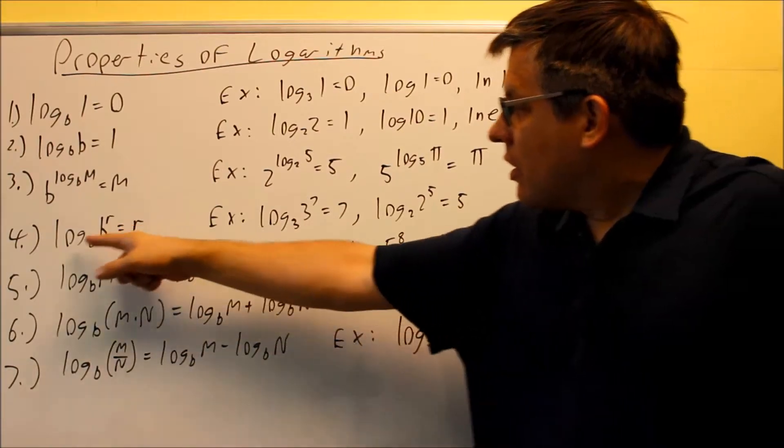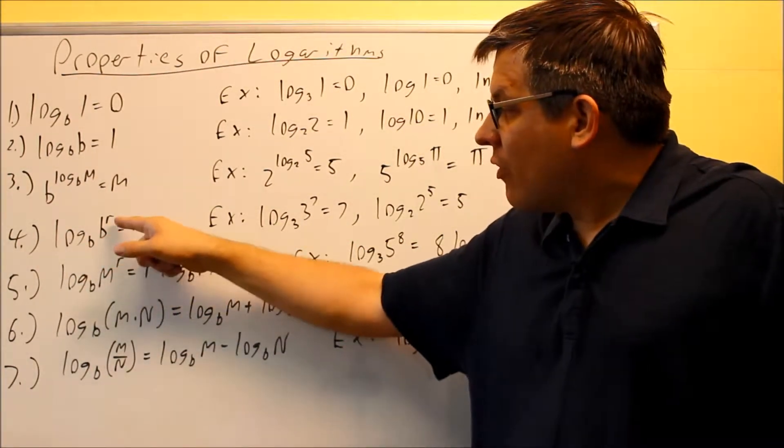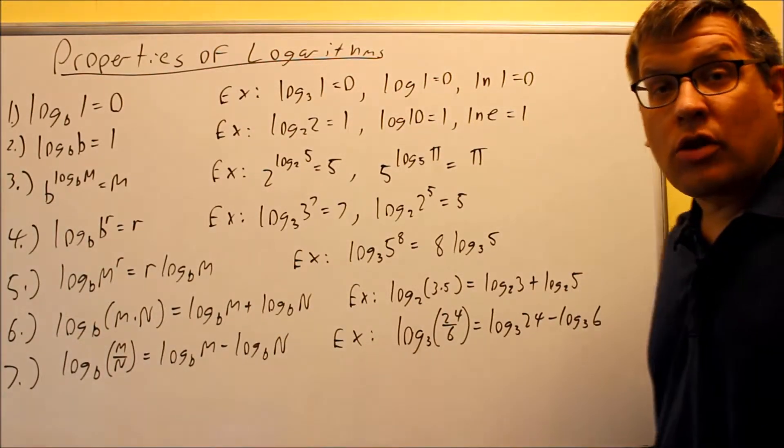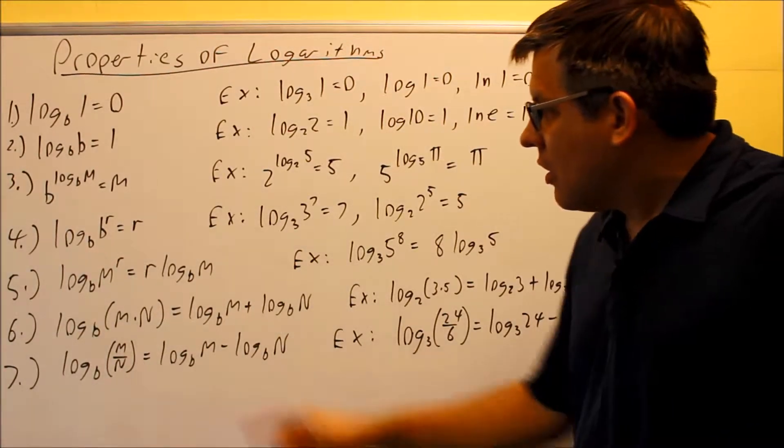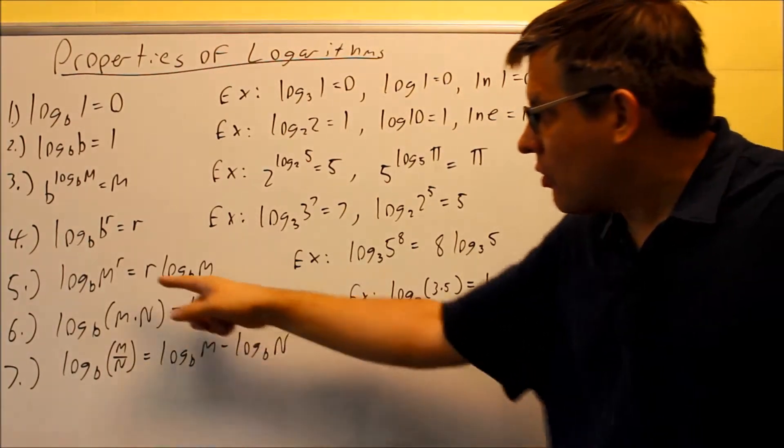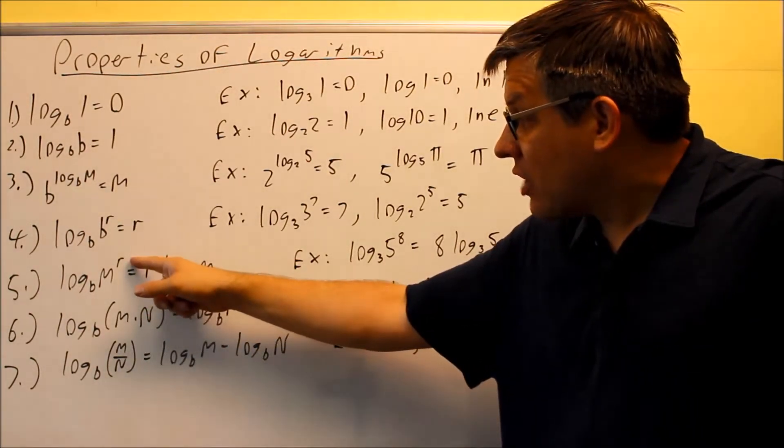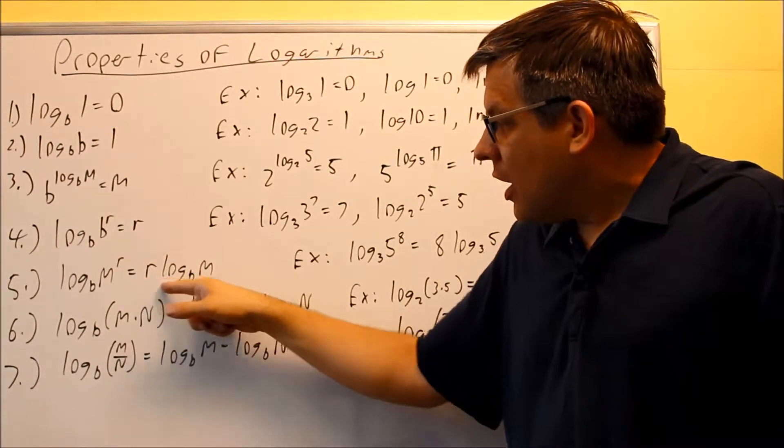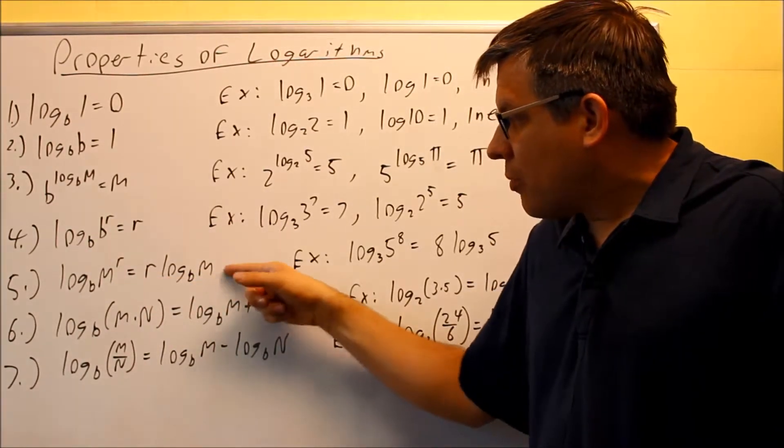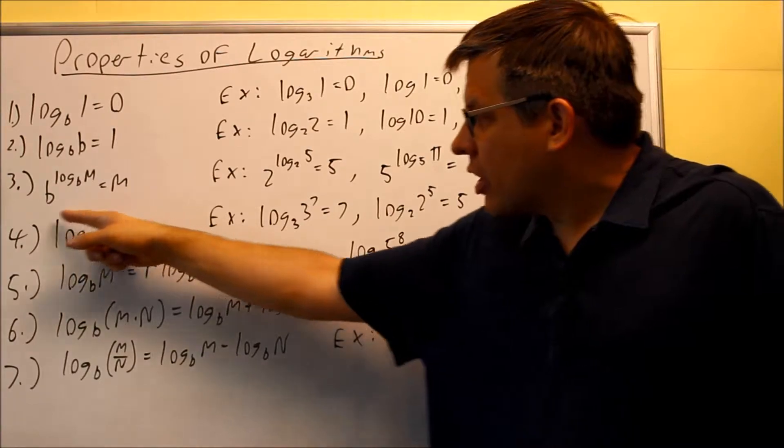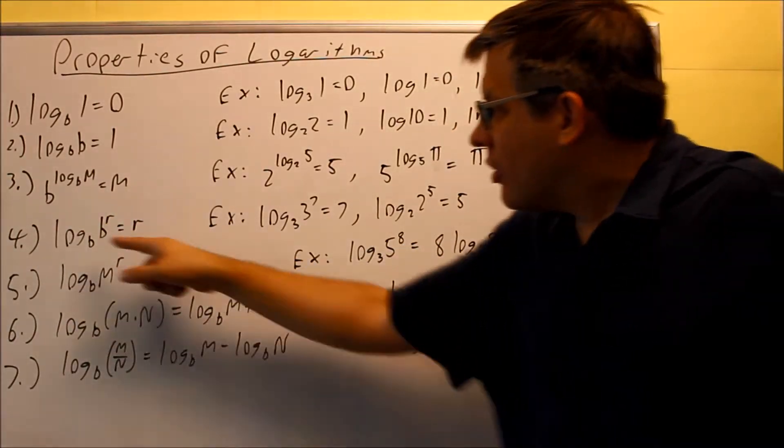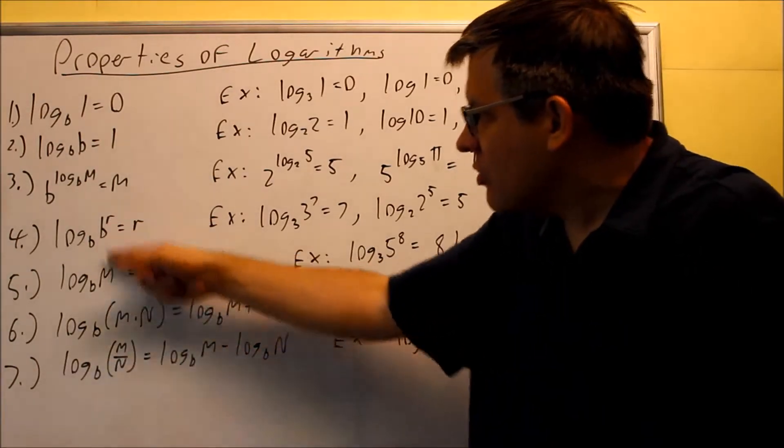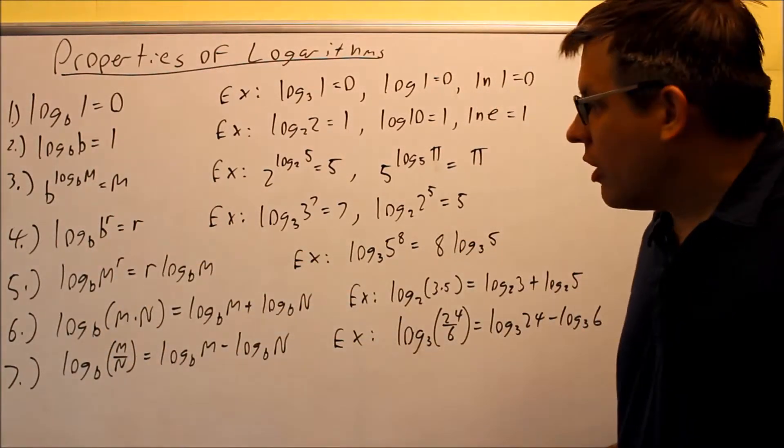Next one. If I have log base B of B^r, these two are going to cancel out. The reason this works is because of the fifth rule. The fifth rule says you're allowed to take the exponent part and bring it down in front. So if we apply that rule, the r comes down in front. Log base B of B equals 1, so you have 1 times r. These two properties are related to each other.